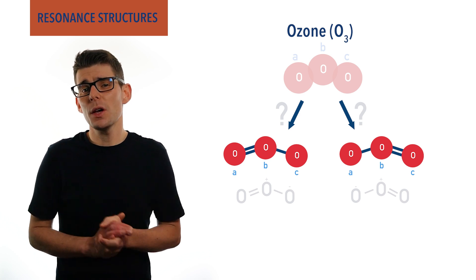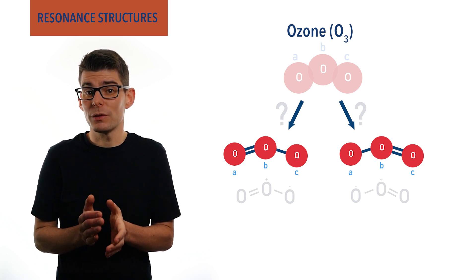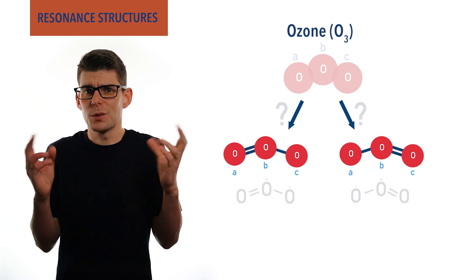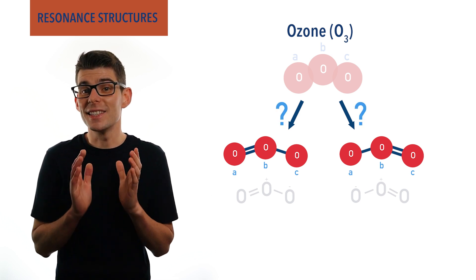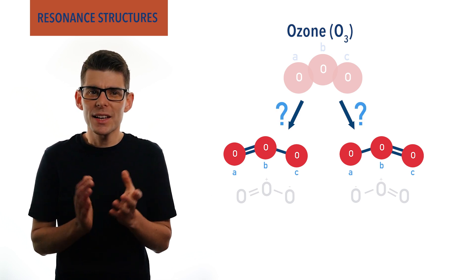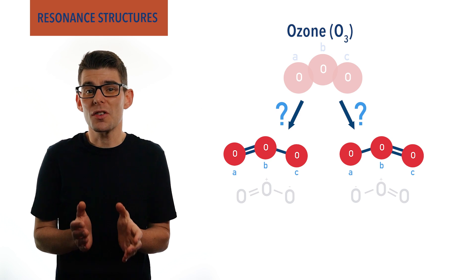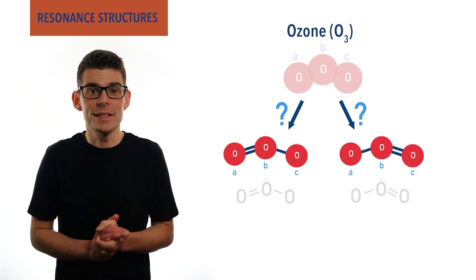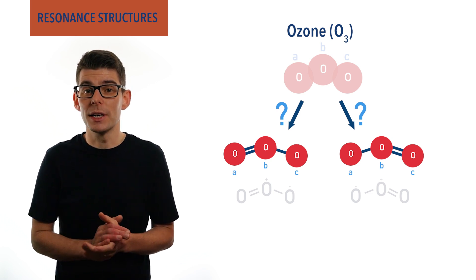So if this ozone molecule can be considered as having two possible structures, which is the right one? The answer is neither on its own. As strange as it sounds, these structures don't actually exist. They are just ways we can represent the bonding.